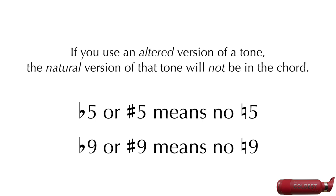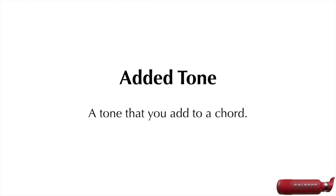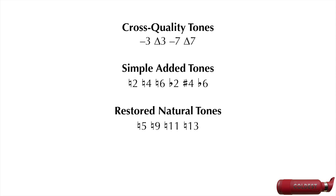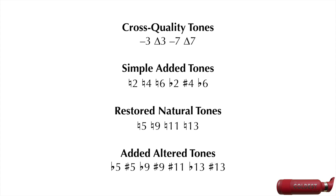If you want to put the natural 9 back in, it will be an added tone. An added tone is a tone that you add to a chord. There are four types of added tones. The minor 3, major 3, minor 7, and major 7 are the cross-quality tones. The natural 2, natural 4, natural 6, flat 2, sharp 4, and flat 6 are the simple added tones. The natural 5, natural 9, natural 11, and natural 13 are the restored natural tones. And the b5, sharp 5, flat 9, sharp 9, sharp 11, flat 13, and sharp 13 are the added altered tones.